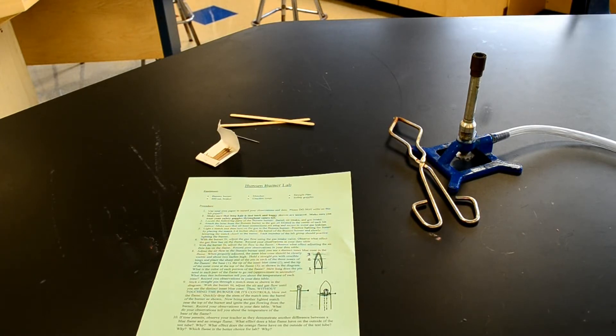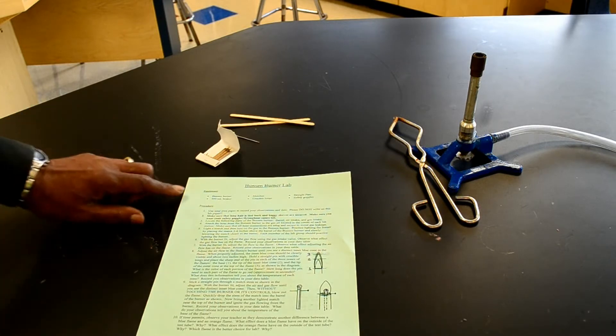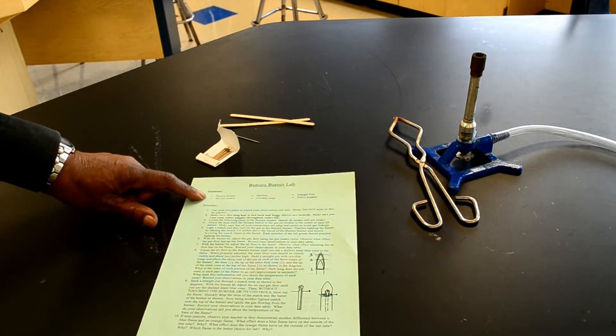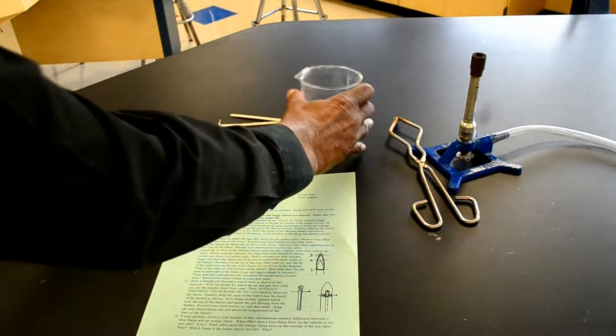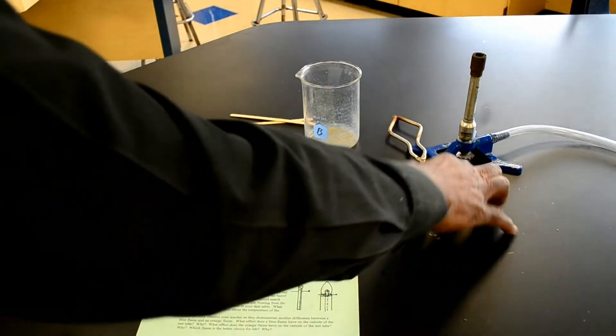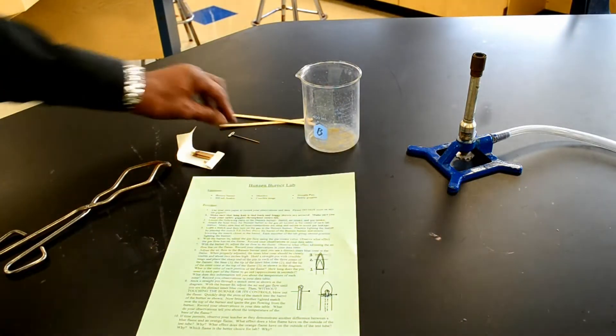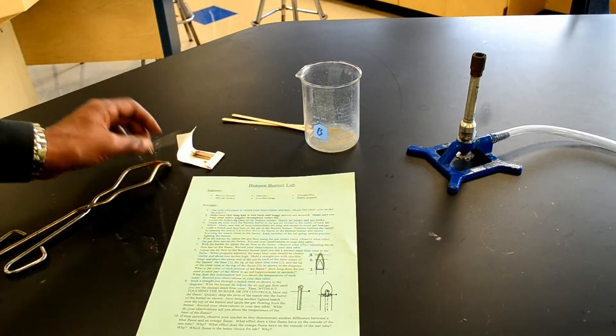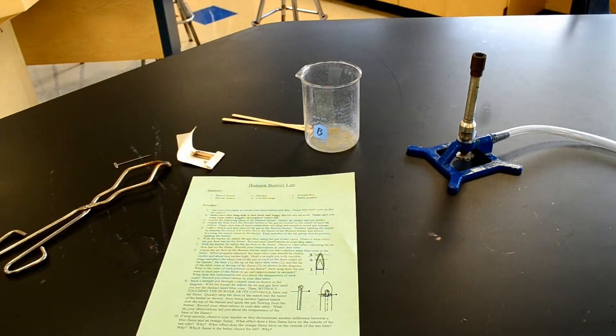It's called the Bunsen burner lab. The equipment needed is a Bunsen burner, a 400 milliliter beaker, matches, crucible tongs, a straight pin, and of course, safety goggles.